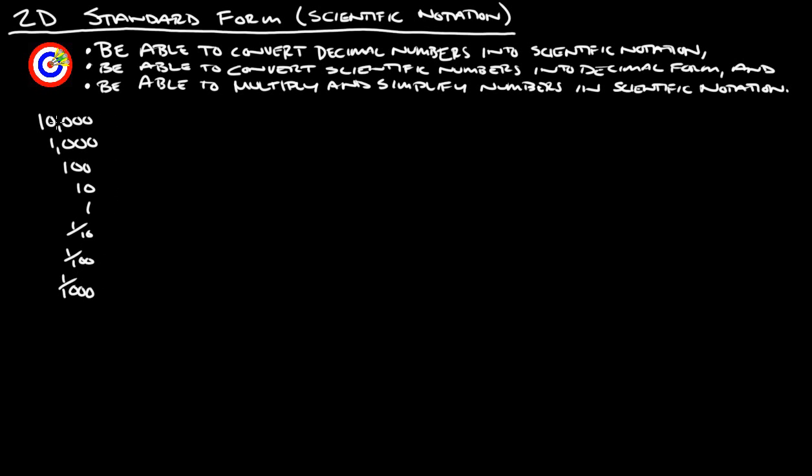Now, as we move down this way, each time we go down a level, we are actually just dividing by 10 each time. 10,000 divided by 10 gives us 1,000. 1,000 divided by 10 gives us 100.